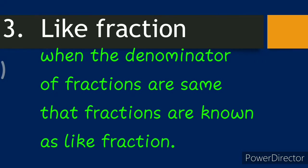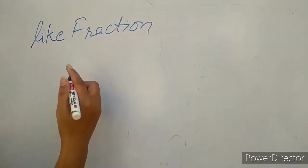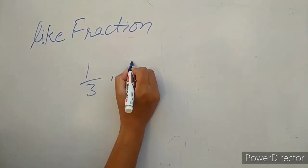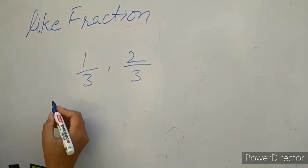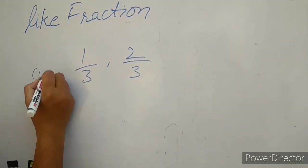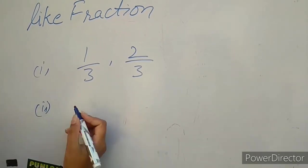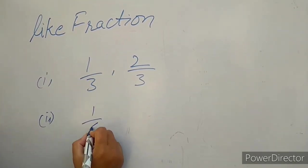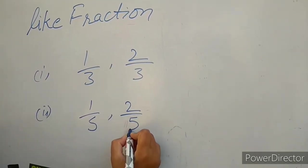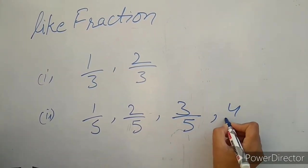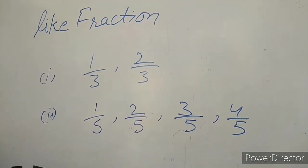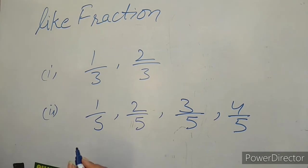Third: like fractions. When the denominators of fractions are the same, those fractions are known as like fractions. For example, one over three and two over three are like fractions because their denominators are equal. Similarly, one over five, two over five, three over five, and four over five are all like fractions.